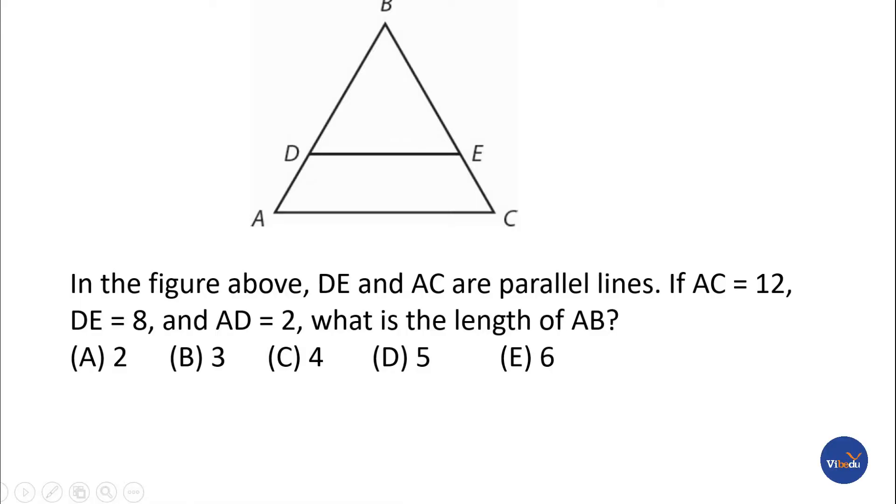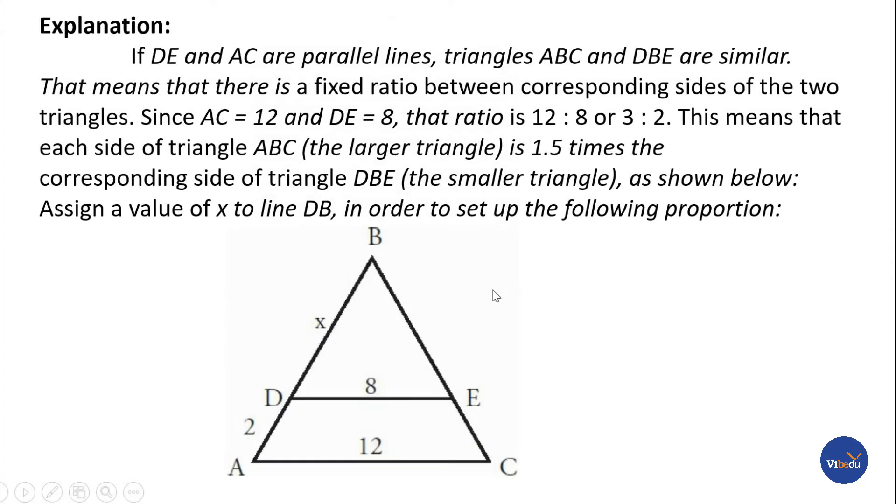Hi friends, in this video we are going to discuss a geometry problem. In the figure above, triangle ABC with DE and AC as parallel lines. If AC equals 12, DE equals 8, and AD equals 2, what is the length of AB? Different options are given in the explanation.